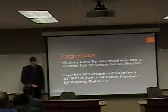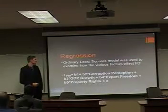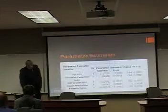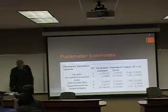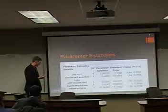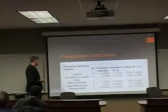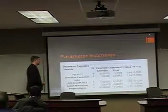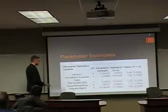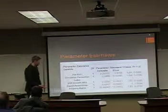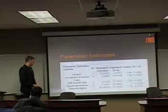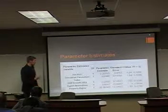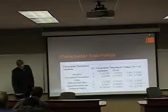I used ordinary least squares regression to go over these variables and find their impact on foreign direct investment. Here's the equation we used. I came back with these parameter estimates. The positive signs on corruption and export restrictions basically say that as corruption goes down and as export restrictions go down, foreign direct investment goes up. Similarly, the negative signs on GDP and property rights — which is somewhat surprising — indicate that as they both go up, foreign direct investment goes down, which was quite surprising to me when I found it.